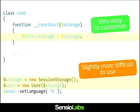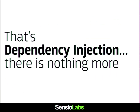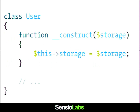This slide is dependency injection. That's dependency injection — nothing more. Very easy to understand, very easy to use if you want. The biggest problem being that it's a bit more difficult to use, and that's why some people don't really use dependency injection. The difference between the two different user classes is subtle but very important: in one case I create the storage object within the constructor, and when using the dependency injection pattern I inject it into the constructor instead.